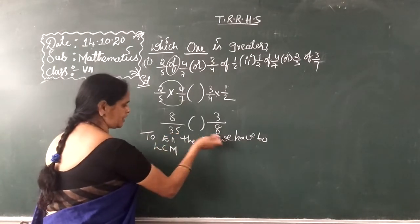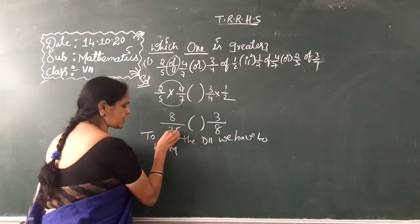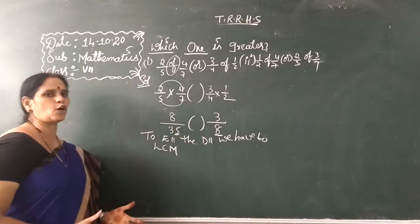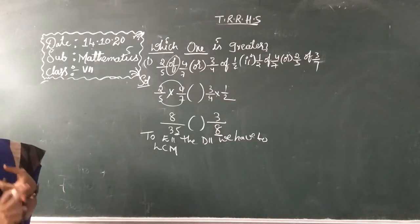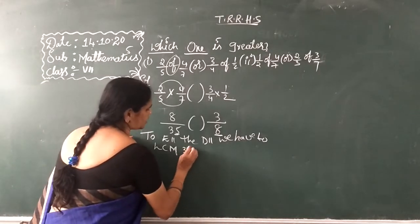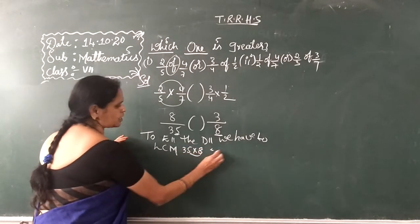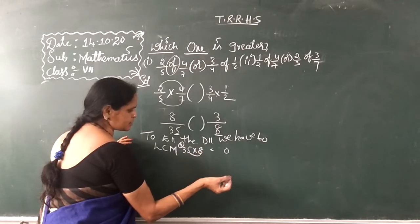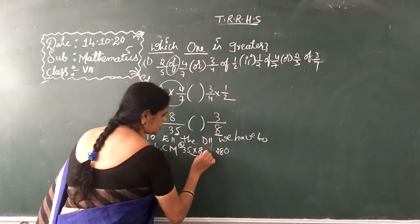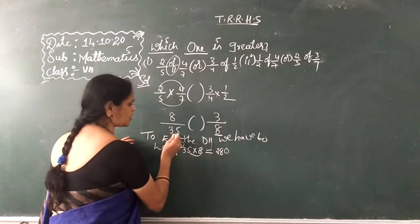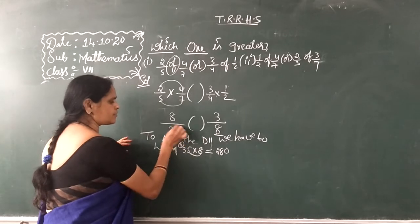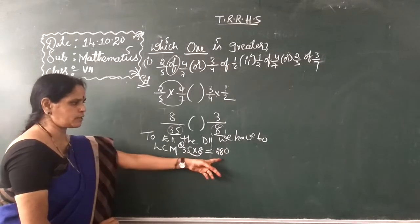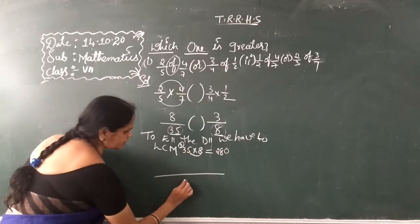Now what is the LCM of 35 and 8? So 35 is an odd number and 8 is an even number, so there are no common factors. So simply you should do multiplication — 35 into 8. So 8 5's are 40, carry 4; 8 3's are 24, plus 4 is 28. So the LCM is 280. Because 35 is odd and 8 is even with no common factors, you multiply them to get LCM = 280.